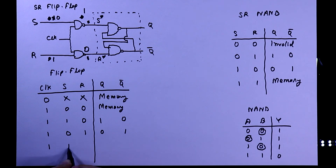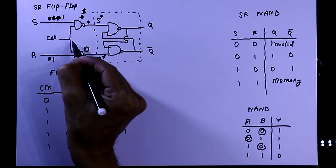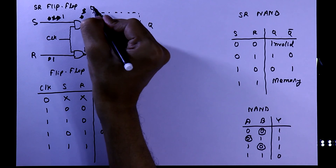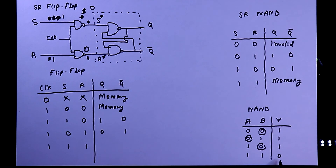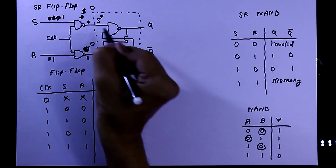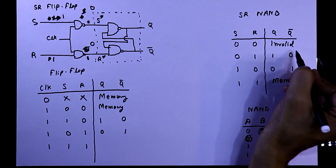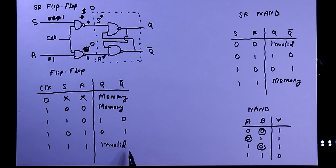Clock is one, S is one, R is one. Both inputs of the first NAND gate are one, so we will get zero in the output. Here also both inputs are one, so we will get zero in the output. If both inputs of the SR latch are zero, zero, then we will have an invalid output. So this is the truth table of the SR flip flop — when the input is one, one, we will get invalid.